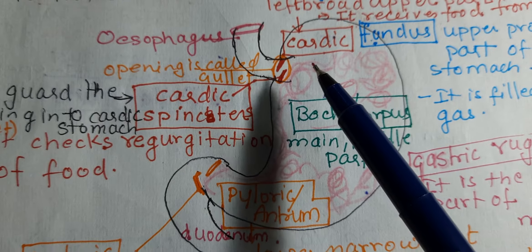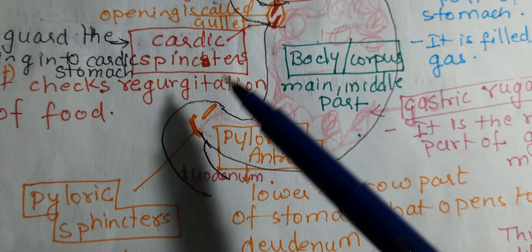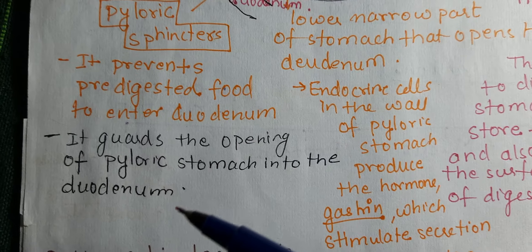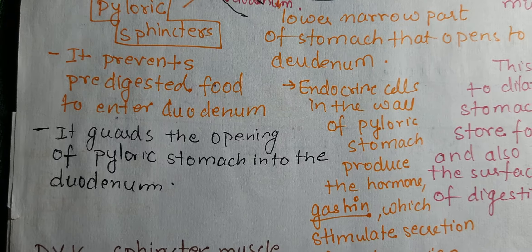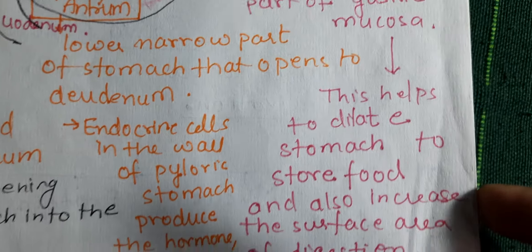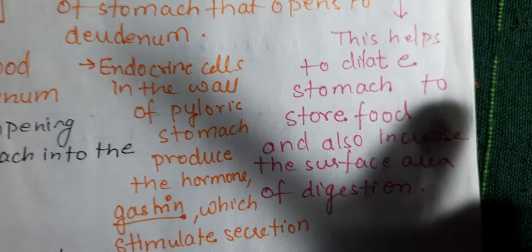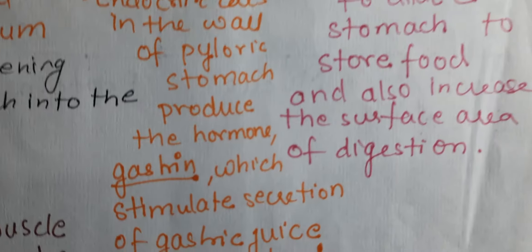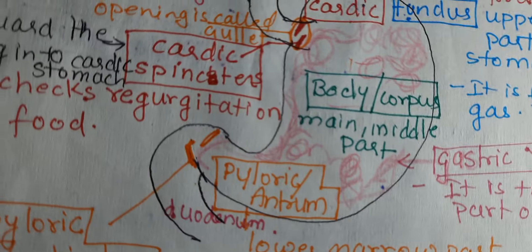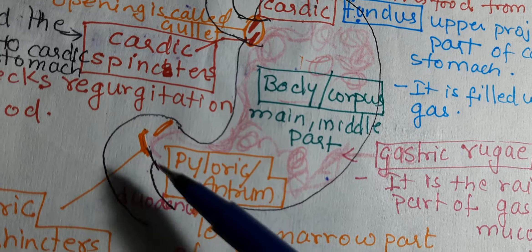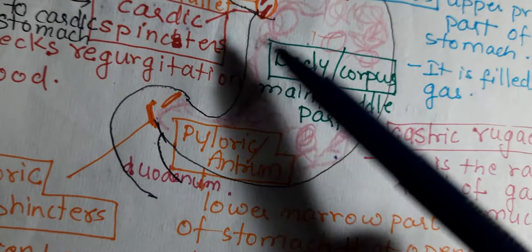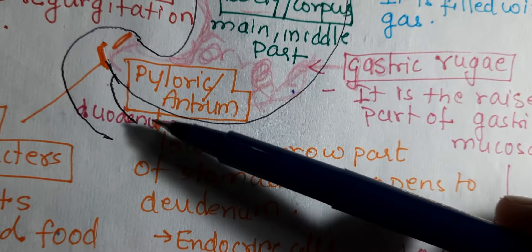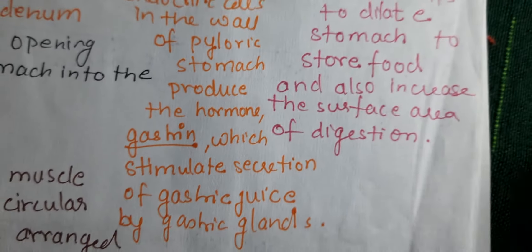At the anterior portion, cardiac sphincters guard the opening and prevent food from going back into the esophagus. At the pyloric end, the sphincter prevents pre-digested food from entering the duodenum and guards the opening of the pyloric stomach into the duodenum. Endocrine cells are located in the pyloric antrum, which secrete the hormone gastrin.